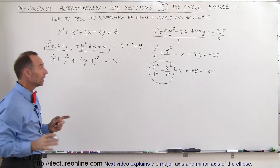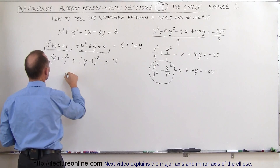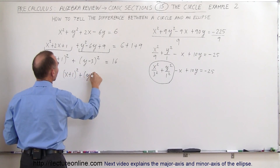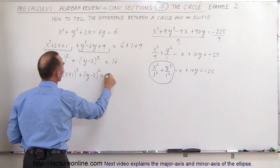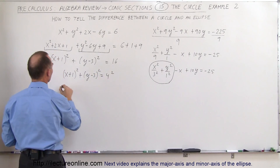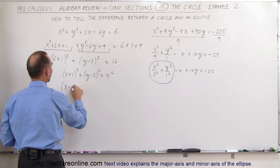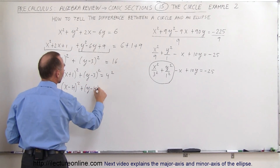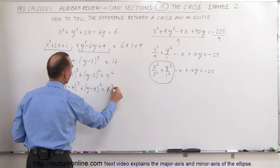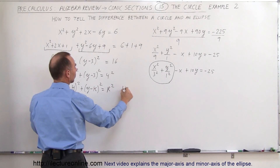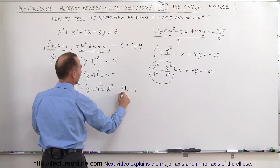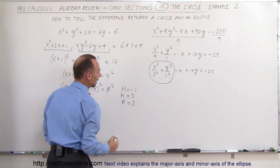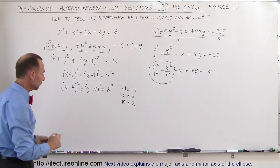And then finally we can write it in its final form: (x + 1) squared plus (y − 3) squared is equal to 4-squared. And so that's the standard form x minus h, squared, plus y minus k, squared, equal to r-squared. Which means that in this case h is equal to negative 1, k is equal to 3, and r is equal to 2. And now we can go ahead and graph that circle.